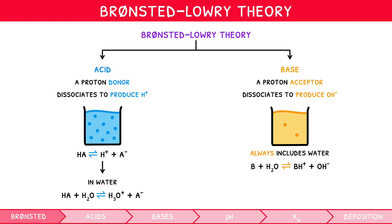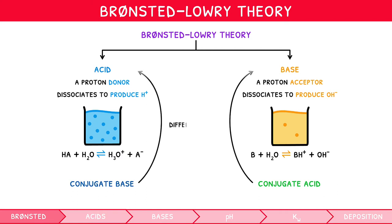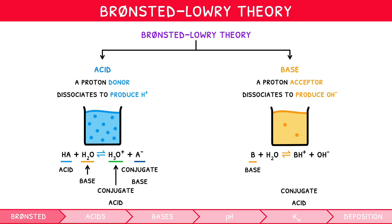When discussing the Brønsted-Lowry definitions, two related terms are often used: conjugate acids and conjugate bases. A conjugate acid and base are simply a pair of molecules which differ from one another by a single H+. Revisiting our two previous equations, for the acid HA, its conjugate base is A-. Thus, H2O can be considered a base, with a conjugate acid of H3O+. For the base B, its conjugate acid is BH+. Thus, H2O can be considered an acid, with a conjugate base of OH-.